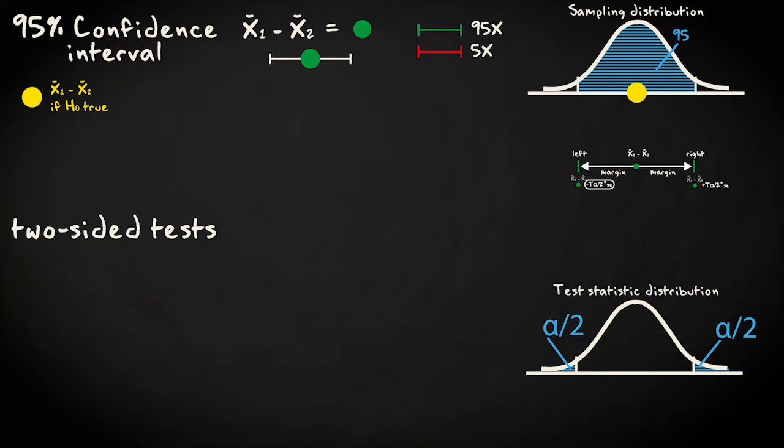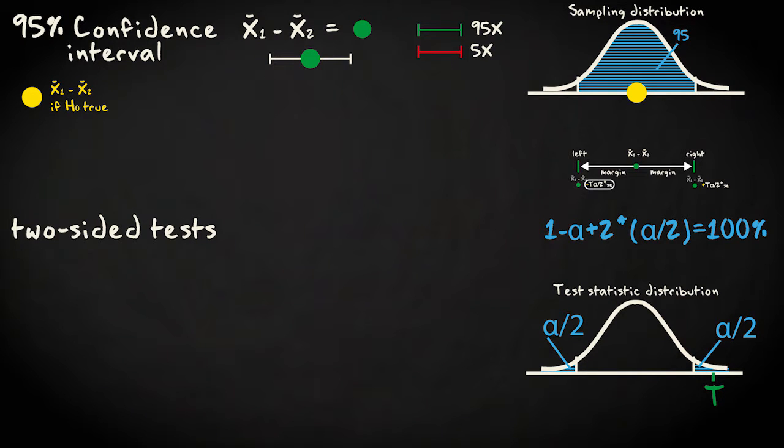With a two-sided test, we hope to find a test statistic value outside the boundaries, in the critical region. With a confidence interval, we hope to find the value under the null hypothesis outside the boundaries.